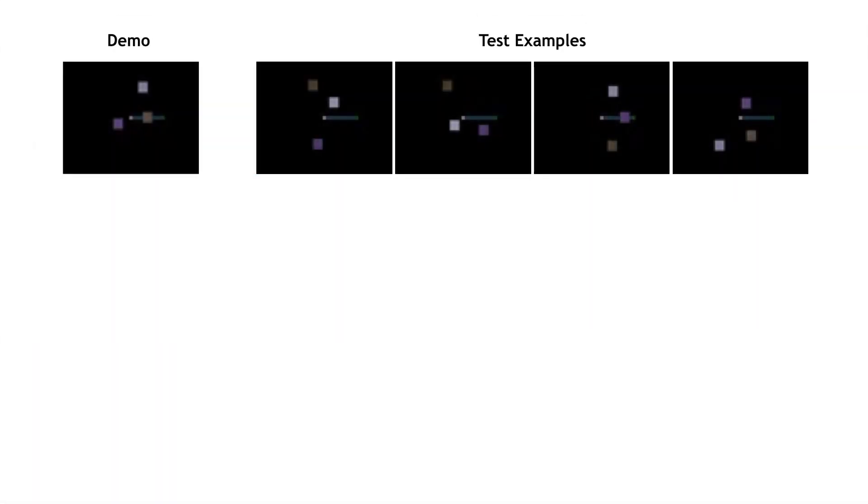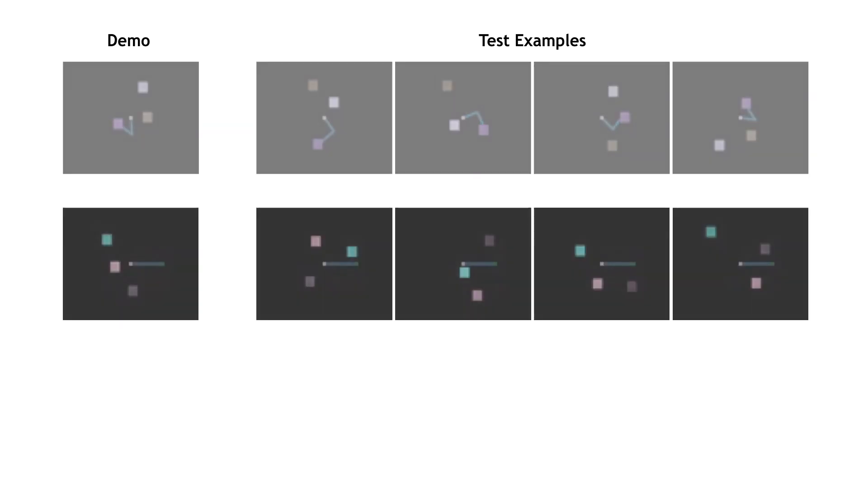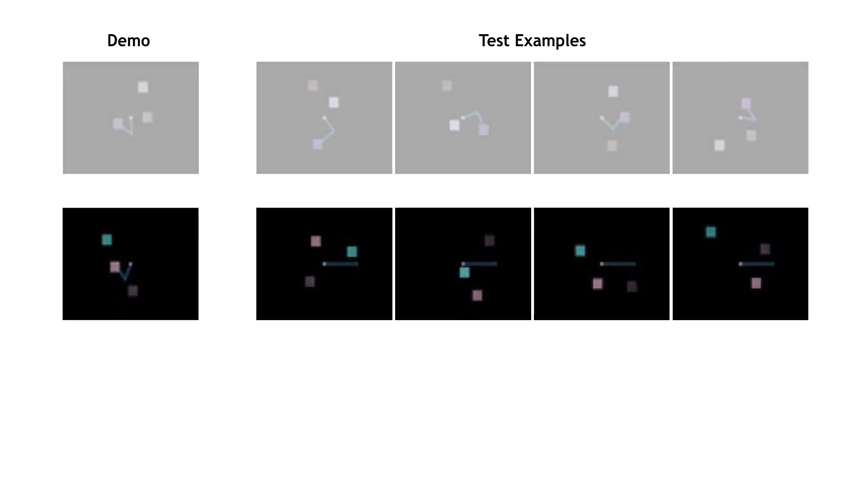We present results on three experimental domains. The first domain is a 2D reaching experiment, where the aim is to reach a target of a particular color in the presence of two distractors with different colors. A single demonstration of a previously unseen task is provided on the left, with the test variations of the task on the right.